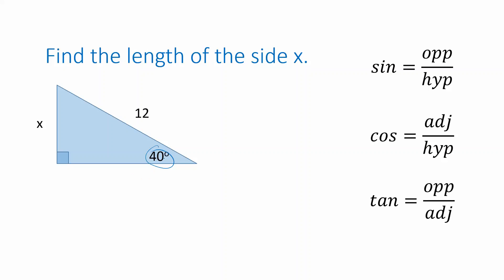Starting with the known angle, we identify the sides of the triangle as being either adjacent — meaning next to the angle — or opposite the angle, meaning on the other side of the triangle. This is the opposite side, and the long side opposite the right angle is the hypotenuse. Based on that, we figure out which trigonometric relationship is available. We know the hypotenuse and want to find the opposite side, so we use the sine function.